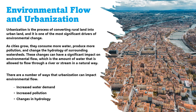Urbanization is the process of converting rural land into urban land and is one of the most significant drivers of environmental change. As cities grow, they consume more water, produce more pollution, and change the hydrology of surrounding watersheds. These changes have a significant impact on environmental flow. One way urbanization impacts environmental flow is through increased water demand, as cities require more water for drinking, sanitation, and industrial use.